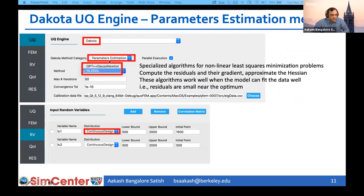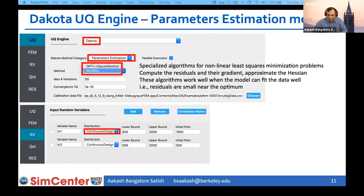Deterministic calibration is called parameter estimation in QuoFEM, available under the Dakota UQ engine. There are two algorithms, both specialized for solving non-linear least squares minimization problems. These algorithms compute residuals and the gradient of residuals and approximate the Hessian. Both are gradient-based local minimization algorithms based on the Gauss-Newton approximation to the Hessian, exploiting the special structure of the non-linear least squares problem where the objective function is the sum of squared error.